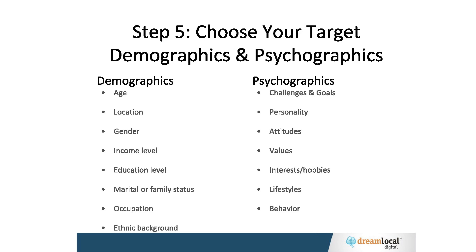So step five — demographics and psychographics — you're going to have them maybe for multiple audiences. At minimum, you'll find some of the psychographics are probably different for your ideal customer than your target customer. You may find the income level is higher, or there's something a little bit different with your ideal over your target.